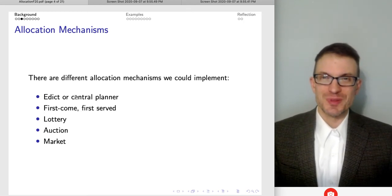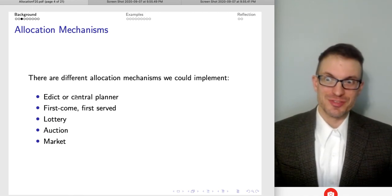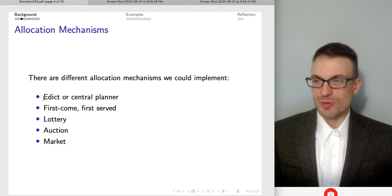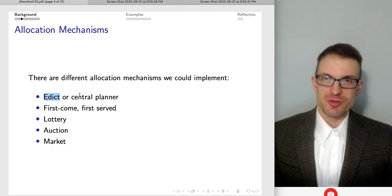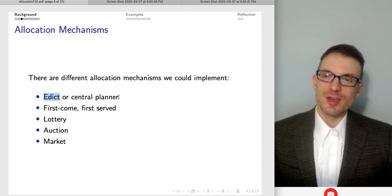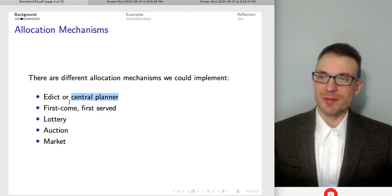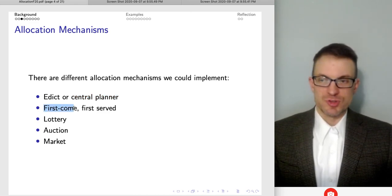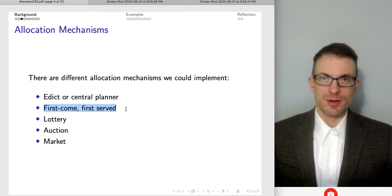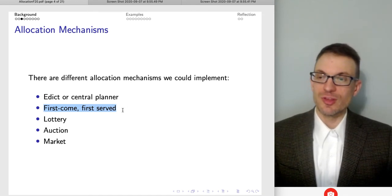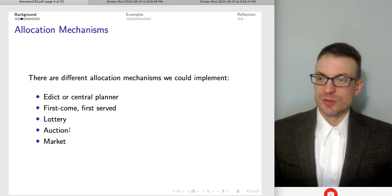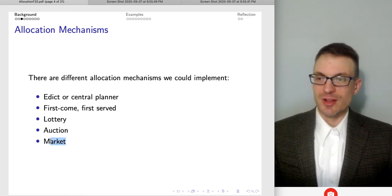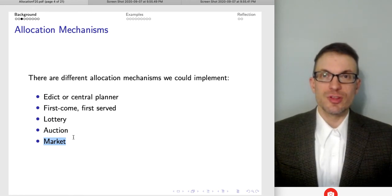We've got a lot of different choices between ways that we can determine who gets that which has been produced. Could be by government decree, you could have a central planner, you could have a centralized economy. Typically, you think of that in like a command or communist type system. We could just do a first come first serve mechanism. And that happens actually kind of a lot of places, especially if there's a shortage. Could have a lottery, could have an auction, could just have standard markets, or you could have things that are kind of in between.